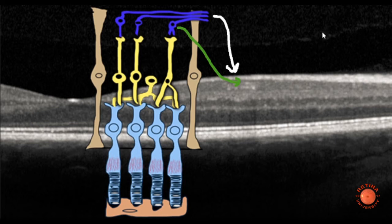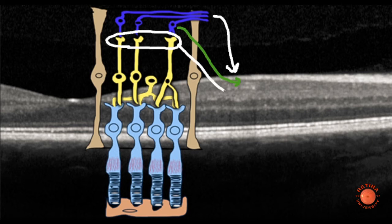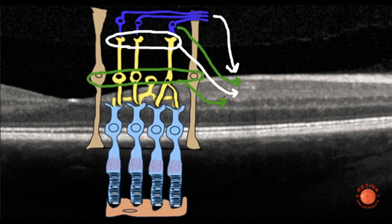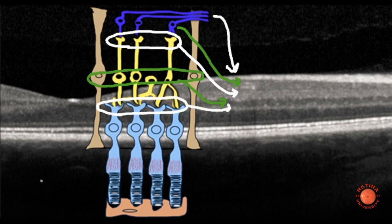And then the next layer which is bright is your inner plexiform layer, followed by your inner nuclear layer, followed by your outer plexiform layer, and then finally your outer nuclear layer. And as you can see, the three dark areas correspond to the nuclei in the retina, and the three bright layers correspond to where the axons are in the plexiform layers and the nerve fiber layer.